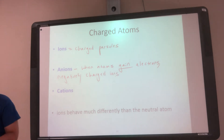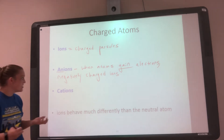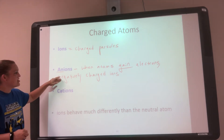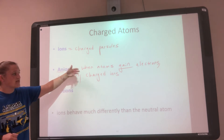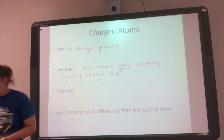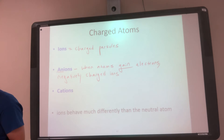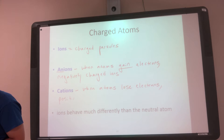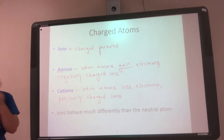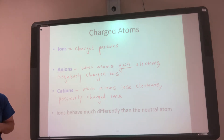For anions, think of 'anti' — think negative. Because if I'm becoming negative, that means I have to gain more negativity, so I have to gain electrons. Cations are the opposite — this is when atoms lose electrons, and they are positively charged ions.